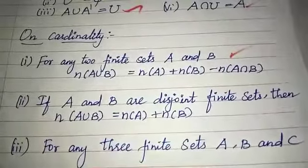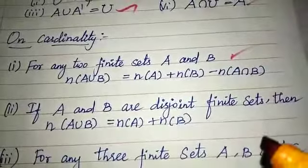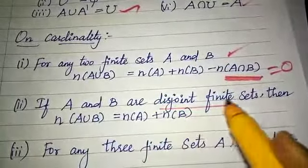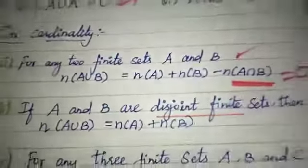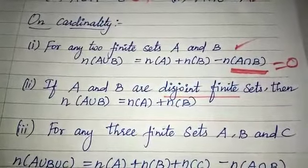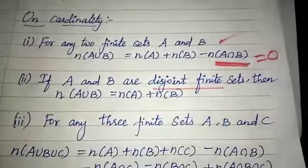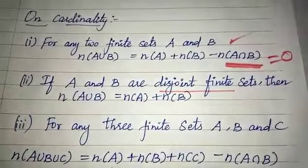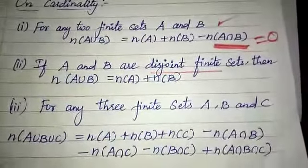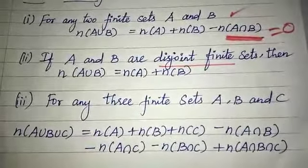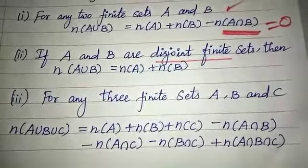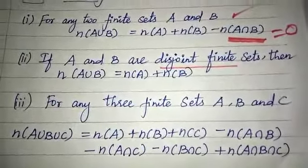If A and B are disjoint finite sets, then n(A intersection B) equals zero, so n(A union B) equals n(A) plus n(B). For three finite sets: n(A union B union C) equals n(A) plus n(B) plus n(C) minus n(A intersection B) minus n(A intersection C) minus n(B intersection C) plus n(A intersection B intersection C).